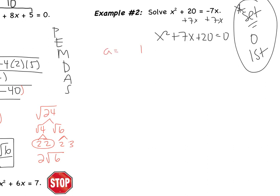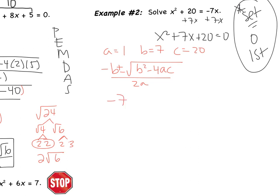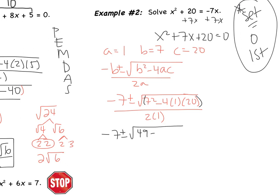First, identify a, b, and c. a is the coefficient in front of x squared — nothing written, so that's understood to be 1. b is the coefficient in front of x, which is 7. And c is my constant — the term without an x — which is 20. Substituting into the quadratic formula: negative 7 plus or minus the square root of 7 squared minus 4 times 1 times 20, all over 2. Order of operations: simplify under the root first. 7 squared is 49; 4 times 1 times 20 is 80. 49 minus 80 is negative 31.